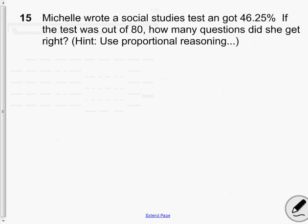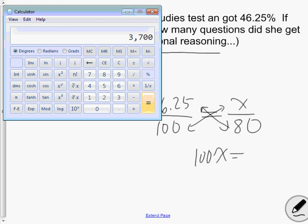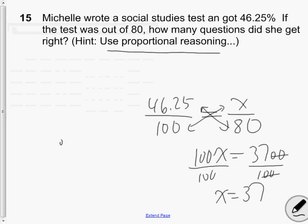Question 15 Michelle wrote a social studies test and got 46.25. If the test was out of 80 how many questions did she get right? It says hint use proportional reasoning. So 46.25 out of 100 would be proportional to or equal to how many out of 80. So when I set it up this way I can now create an algebraic equation 100x equals the product of 80 and 46.25. So the product of 80 and 46.25 is 3,700 divide by your coefficient, x will equal 37. So therefore Michelle got 37 out of 80 on her test.